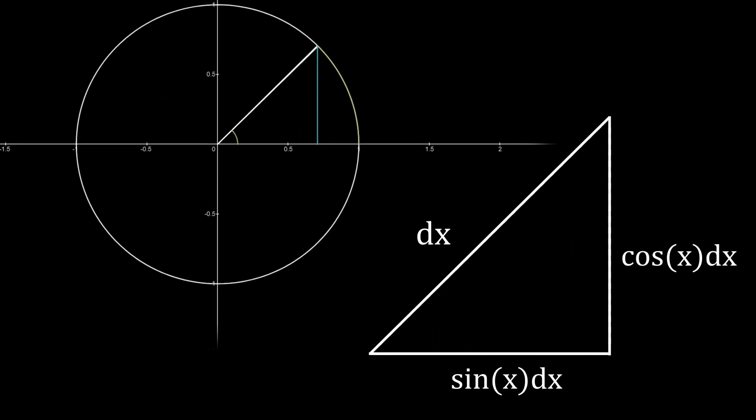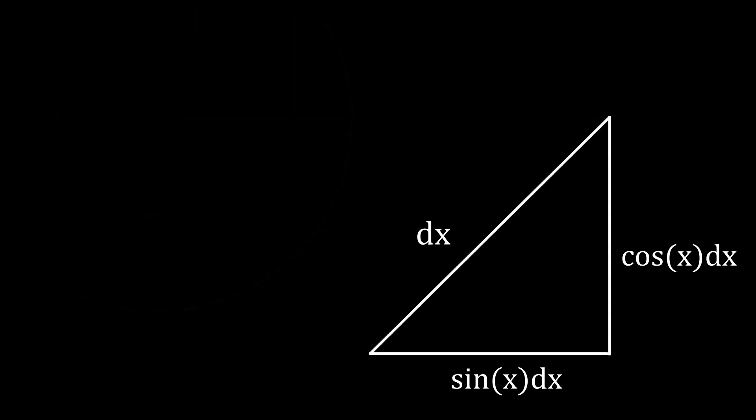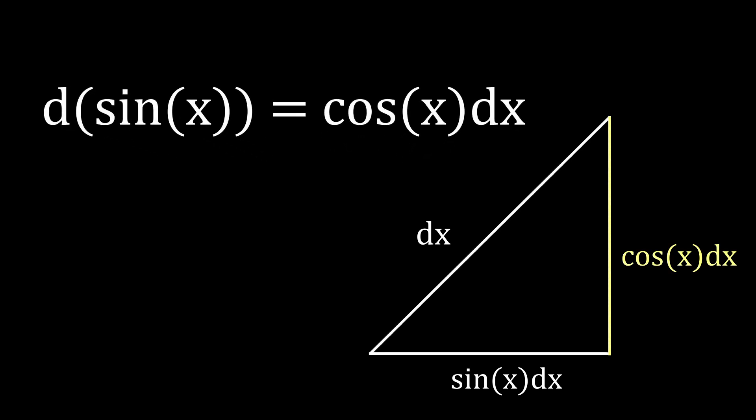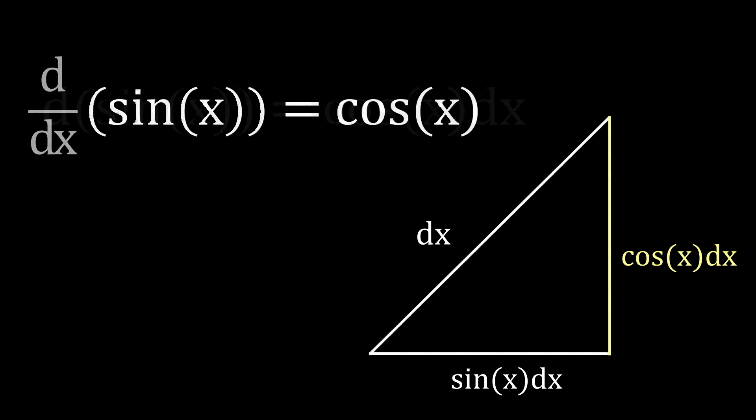Not just any straight line though. If we add two lines to create a right angle triangle, this triangle just so happens to be similar to the triangle created by the radius. This means that the side length that it is increasing by is equal to cos(x) dx. If the difference in sine(x) is equal to cos(x) dx, then the derivative of sine(x) is equal to cos(x).